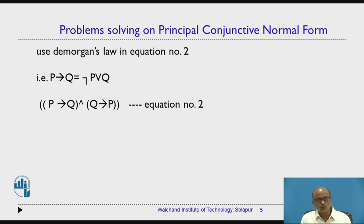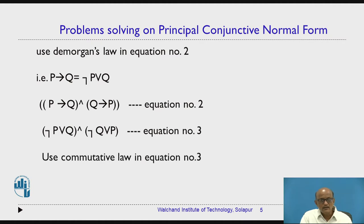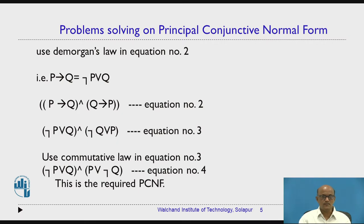Apply De Morgan's law in equation number 2. P conditional Q equals negation P or Q. Use this in equation number 2, so it becomes negation P or Q AND negation Q or P. Then apply commutative law in equation number 3, taking P as first variable and Q as second. That gives negation P or Q AND P or negation Q. This is the required PCNF — the required principal conjunctive normal form for problem statement number 1.